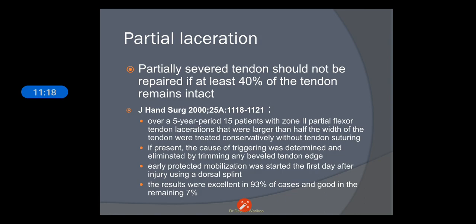Regarding partial lacerations, partially severed tendons should not be repaired if at least 40% of the tendon remains intact. A study in the Journal of Hand Surgery published in 2000 noted that over a 5-year period, 15 patients with Zone 2 partial tendon lacerations larger than half the width of the tendon were treated conservatively. If present, triggering was eliminated by trimming any beveled tendon edge, and results were excellent.